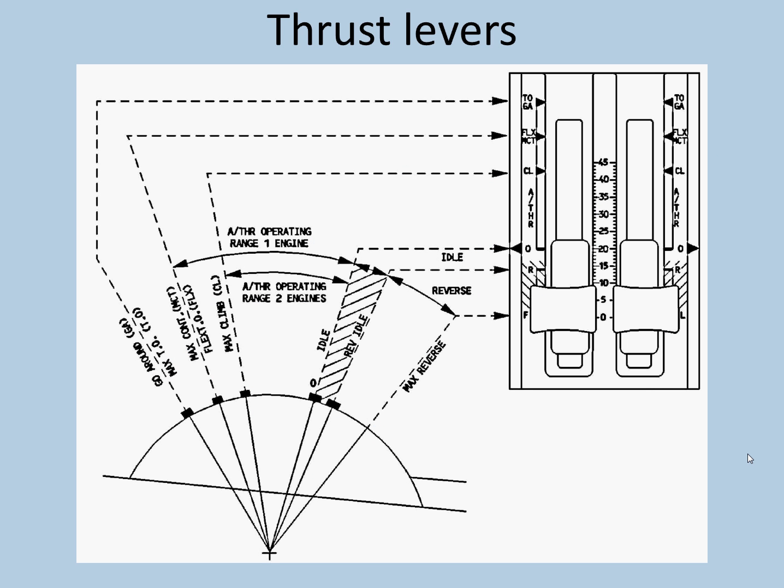I have already discussed thrust levers in a few videos earlier, but I will just give you a quick review. Thrust levers are present in the center pedestal of the aircraft and there are 5 detents, not 6.